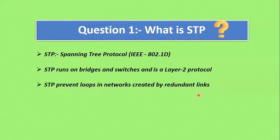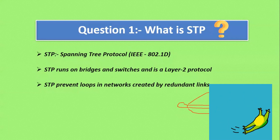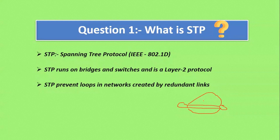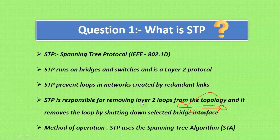STP prevents loops in the network created by redundant links. For example, if we have two switches connected with two cables, frames can loop continuously between them. To avoid that, the STP mechanism blocks one of the ports while keeping another as a forwarding port. STP is responsible for removing Layer 2 loops from the topology.